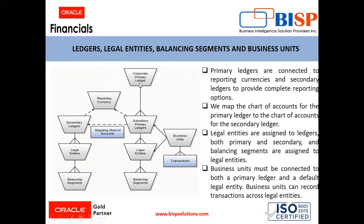In the diagram, you can see the corporate primary ledger is linked with the subsidiary primary ledger. Legal entities and balancing segments are linked with these legal entities. All those are linked with the business units, and under these business units we record the transactions. To link the subsidiary primary ledger with the secondary ledger, we map the chart of accounts, and in the same way we can link all these ledgers and legal entities to record the transactions under the primary ledger.